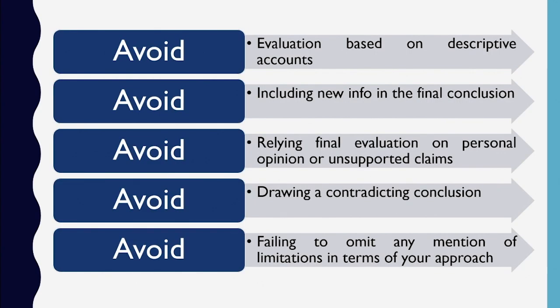The things to avoid during EE writing: the student should avoid making or presenting evaluations that will be based on narrative or descriptive accounts. The student should not include any new information in his final conclusion. He should also avoid any personal opinion or unsupported claims. Students should not present any conclusion that would be in contradiction with their argument presented, and should not overlook any limitation related to the approach adopted.